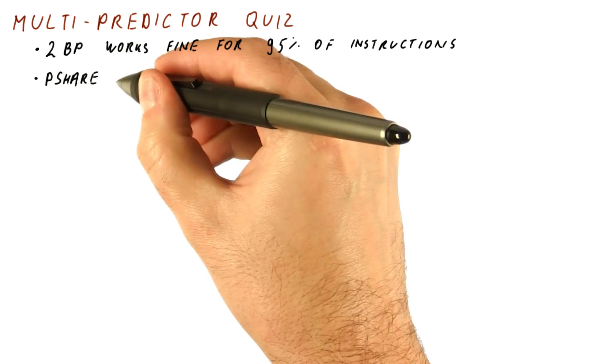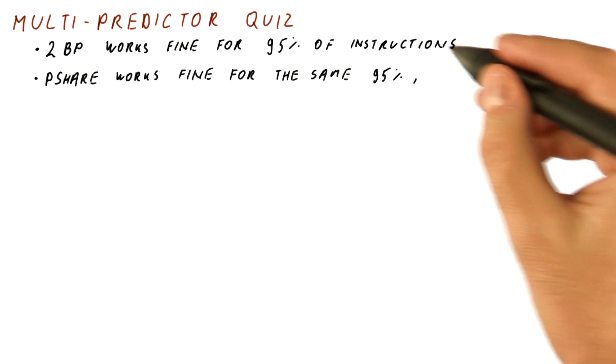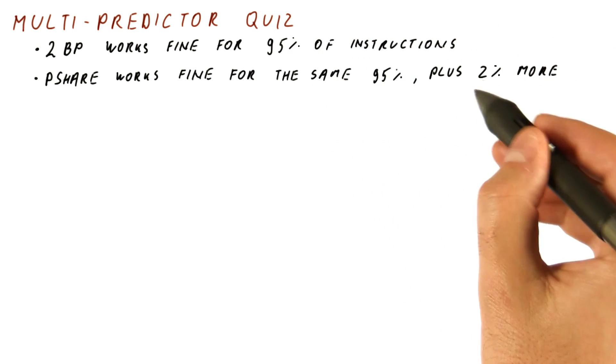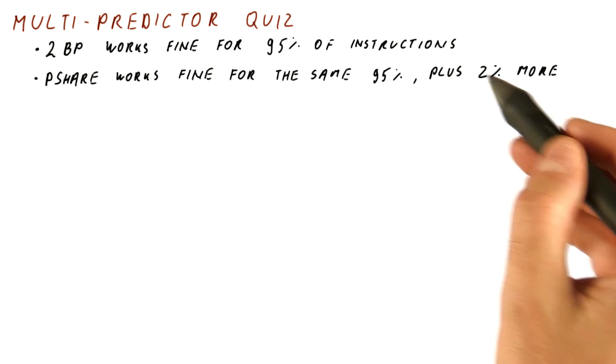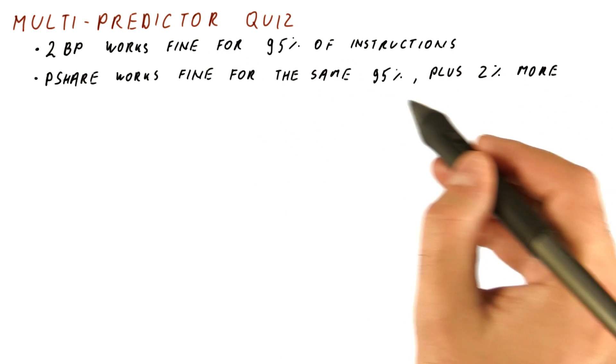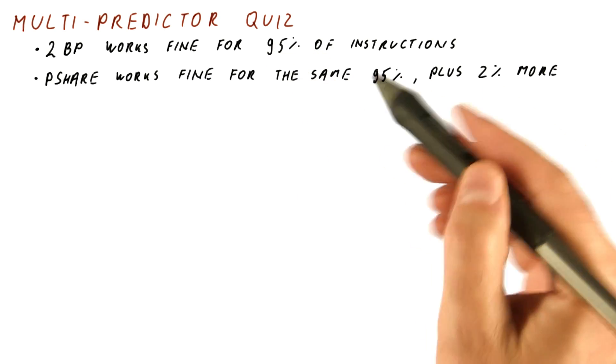A P-share predictor works just fine for the same 95% of the instructions, plus it also works fine for 2% that the two-bit predictor doesn't cover. So overall it works fine for 97% of all instructions, but the 95% here and here overlap.